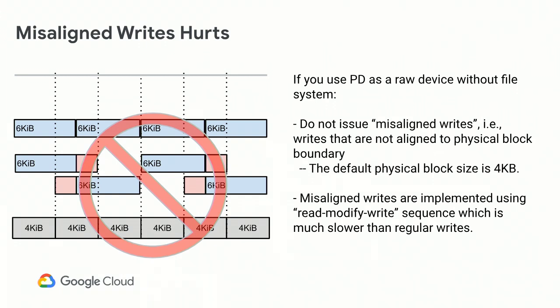If you use PD as a raw device without a file system, be aware of misaligned writes. Always ensure writes are aligned at the physical block size boundary. Misaligned writes — such as a 6 KB write that is not aligned — require a read-modify-write process: reading the old block, modifying it with the new payload, and writing it back. This makes the write process extremely slow.